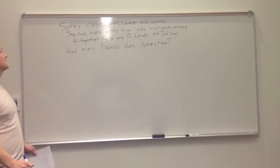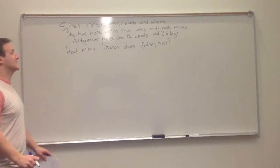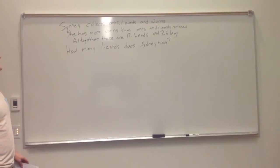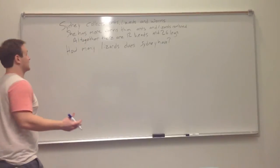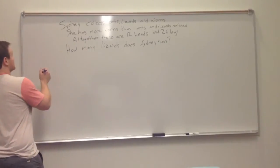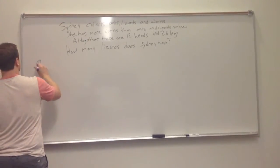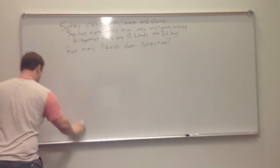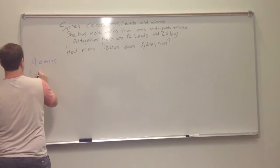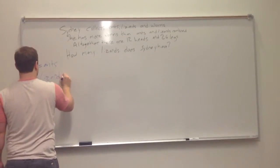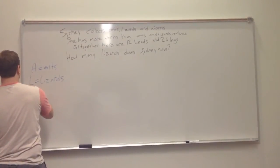Cindy collects ants, lizards and worms. She has more worms than ants and lizards combined. Altogether there are 12 heads and 26 legs. How many lizards does Cindy have? So first we're going to start by writing out things that we know and creating some variables for the animals. A for ants, L for lizards and W for worms.